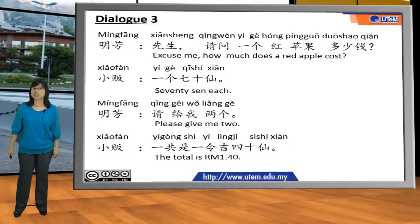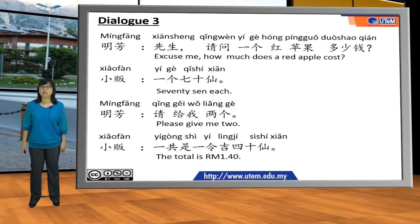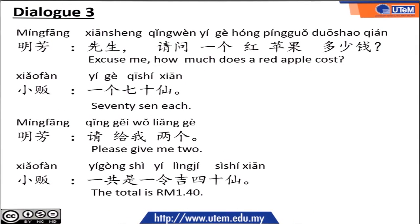Now we come to the conversation between 明芳 and a hawker. 明芳 goes to a fruit store to buy some apples. She said: 先生，请问一个红苹果多少钱? — Excuse me, how much does a red apple cost? The hawker answered: 一个七十仙. — That means 70 cents each. And 明芳 wants to buy two. She said: 请给我两个. — Please give me two. And the hawker said: 一共是一令吉四十仙. — Which means the total is RM1.40.